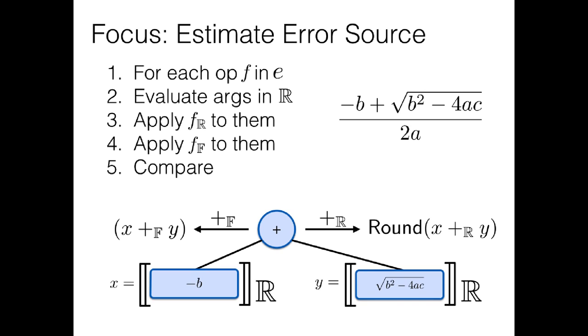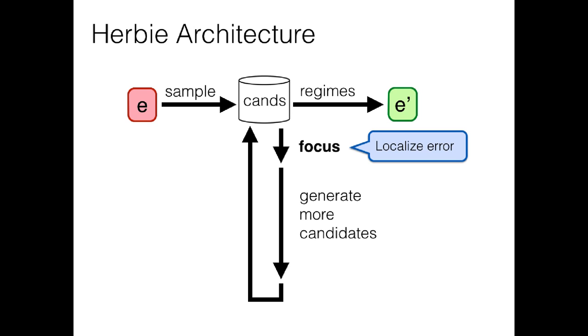If we do this procedure on the quadratic formula, we identify the addition, which contributes to cancellation, and the squaring, which contributes to overflow, as the main causes of error in our expression. Exactly what we want. So now we've identified the parts of the program that need to be changed if we want to improve the error. And the next step is to change those parts of the program.